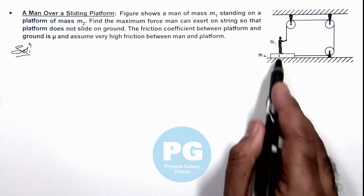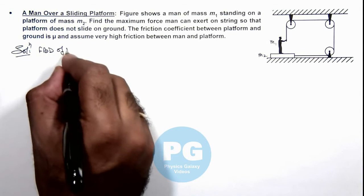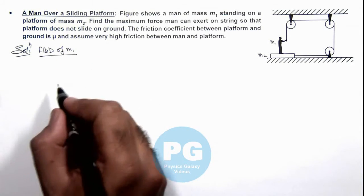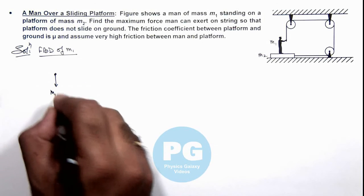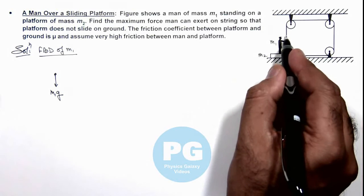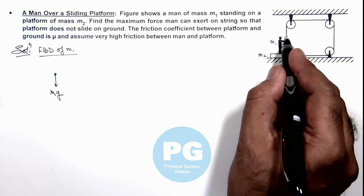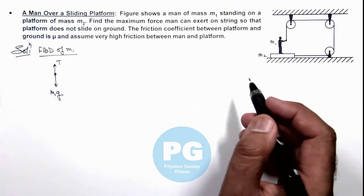If we draw the free body diagram of the man of mass m1, he'll experience his weight m1g in the downward direction. When force is applied on the string, he'll experience a tension in the upward direction. As the string can be considered ideal, the value of force exerted by man will be equal to the tension in the string.